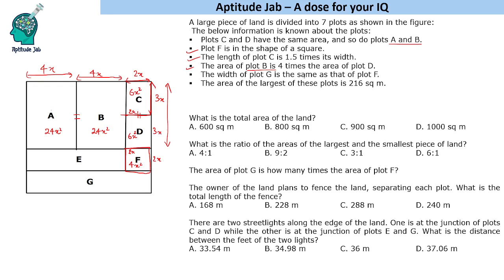The width of plot G is the same as that of plot F. So, width here refers to this length. This is 2x. Now, if you see this length, this is 4 plus 4 plus 2. So, this is 10x. So, this area is 20x square.